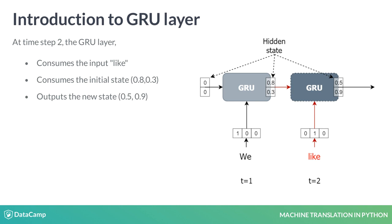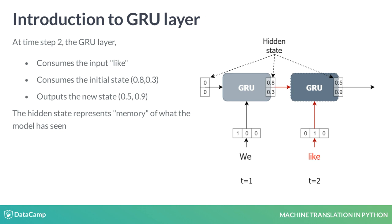The GRU takes in these two inputs to produce a new hidden state, and continues this way to the end of the sentence. The hidden state obtained from the previous step acts as memory of what the model has seen previously. These hidden states are computed using the internal parameters of the GRU model, which are learned during the model training.